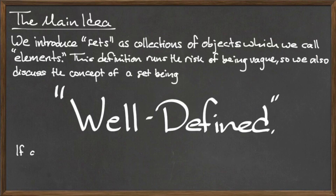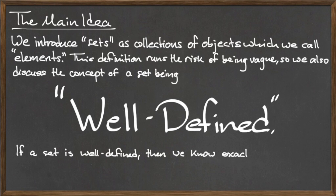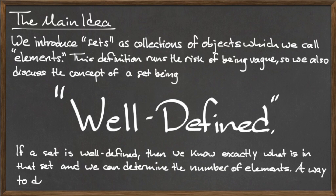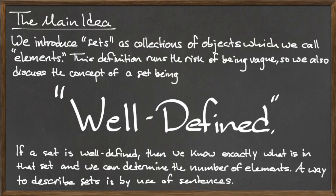A well-defined set is one in which the elements of that set can be easily described, and therefore we know exactly what is in the set, as well as being able to determine the number of elements in that set.